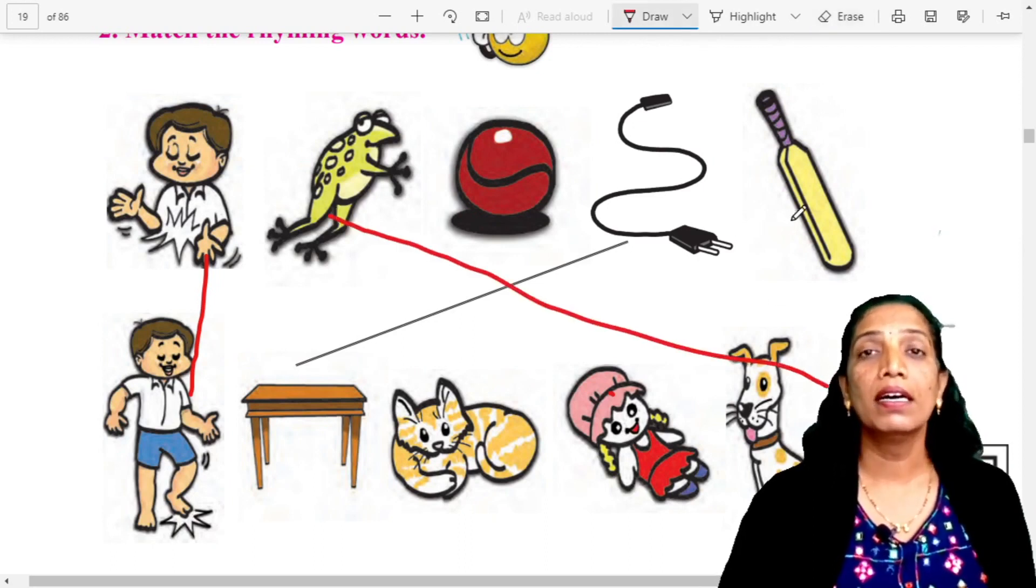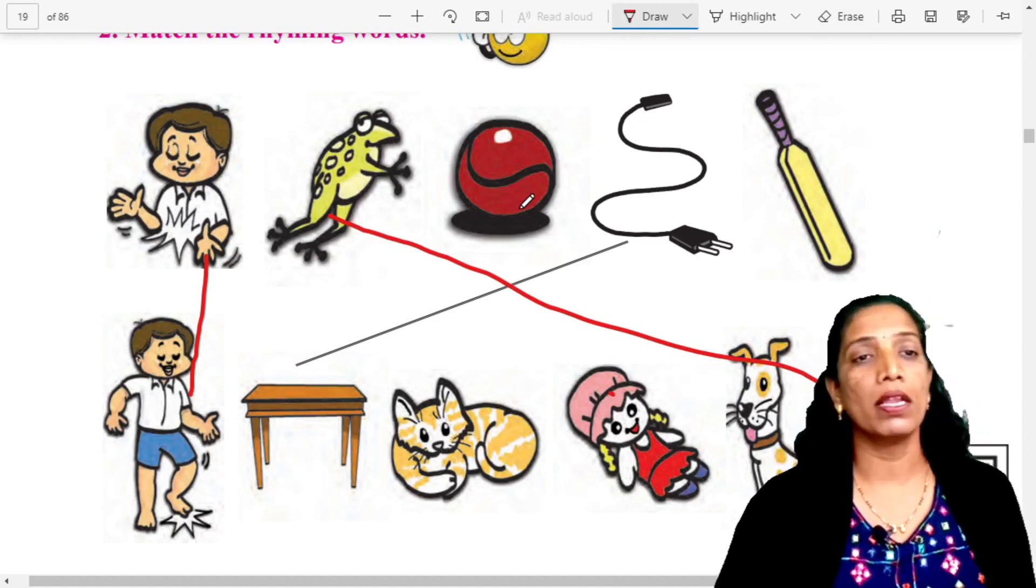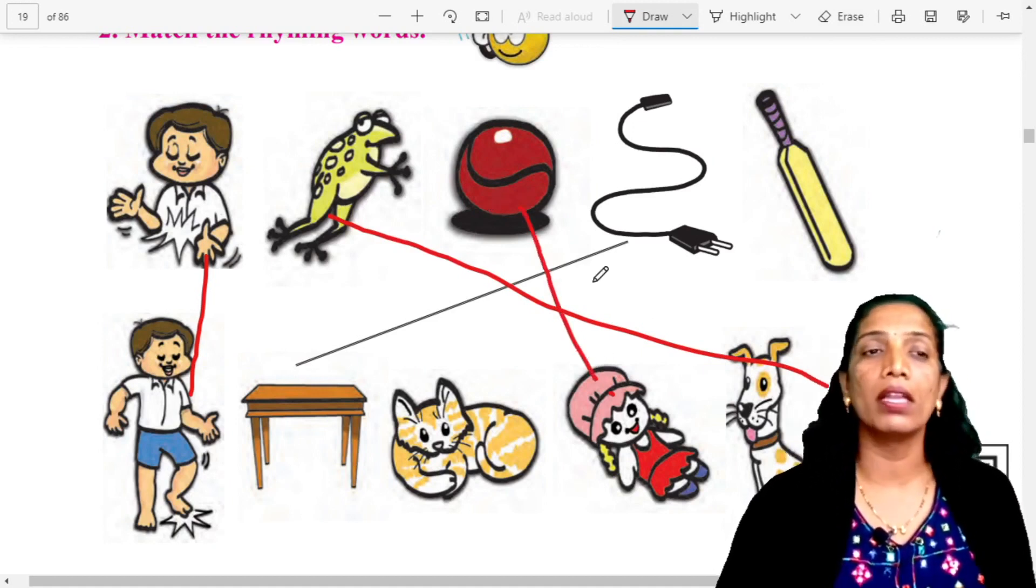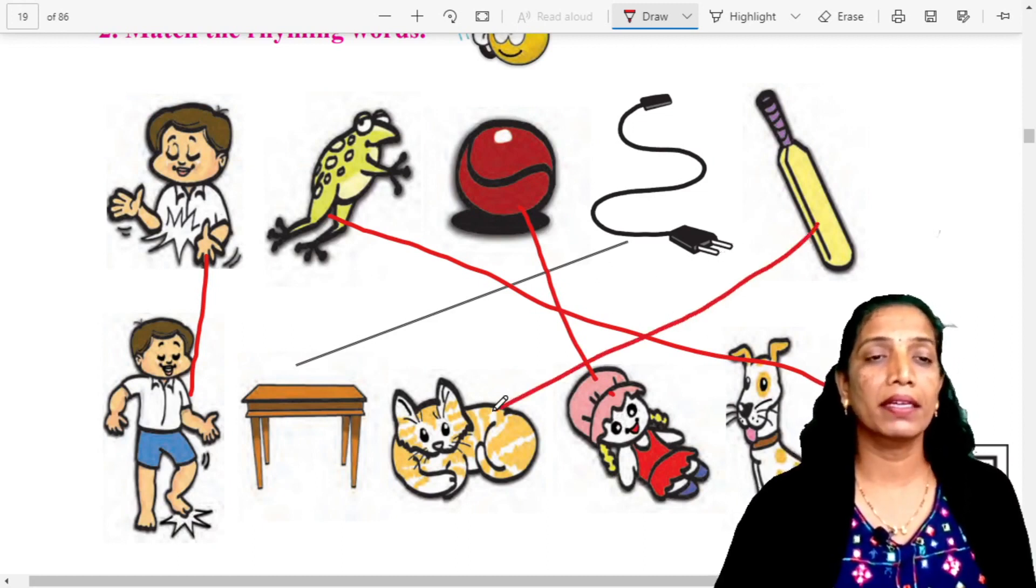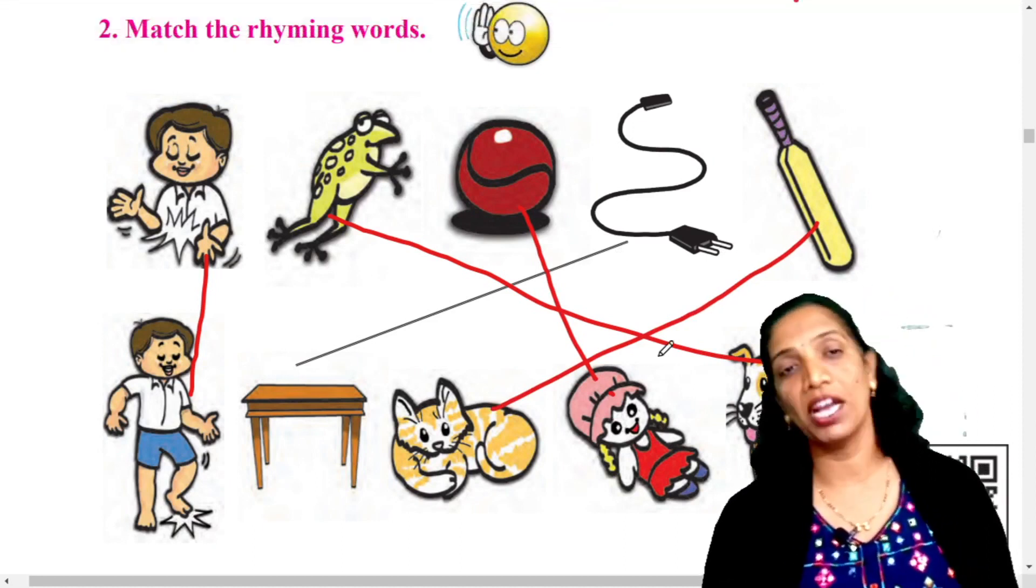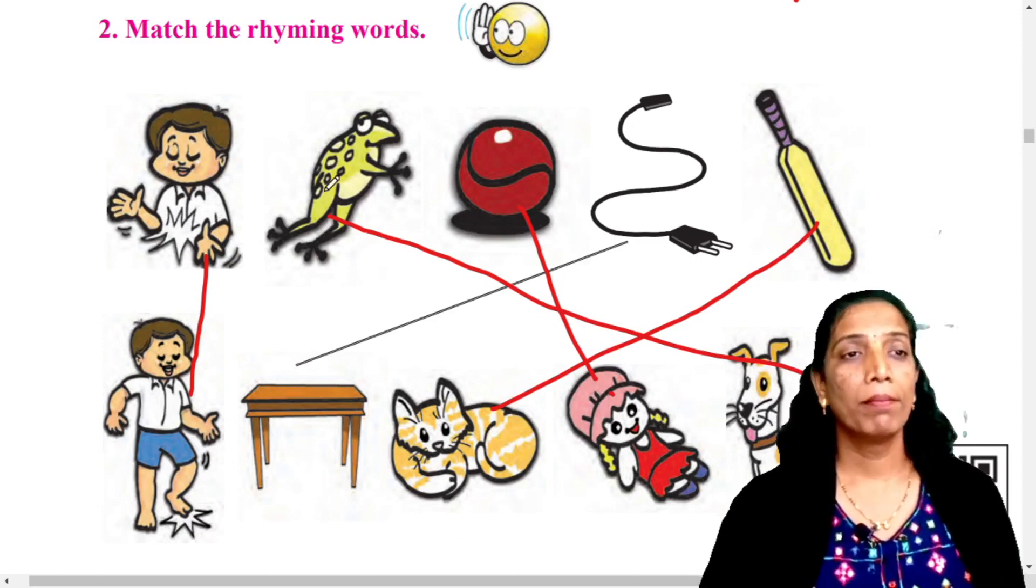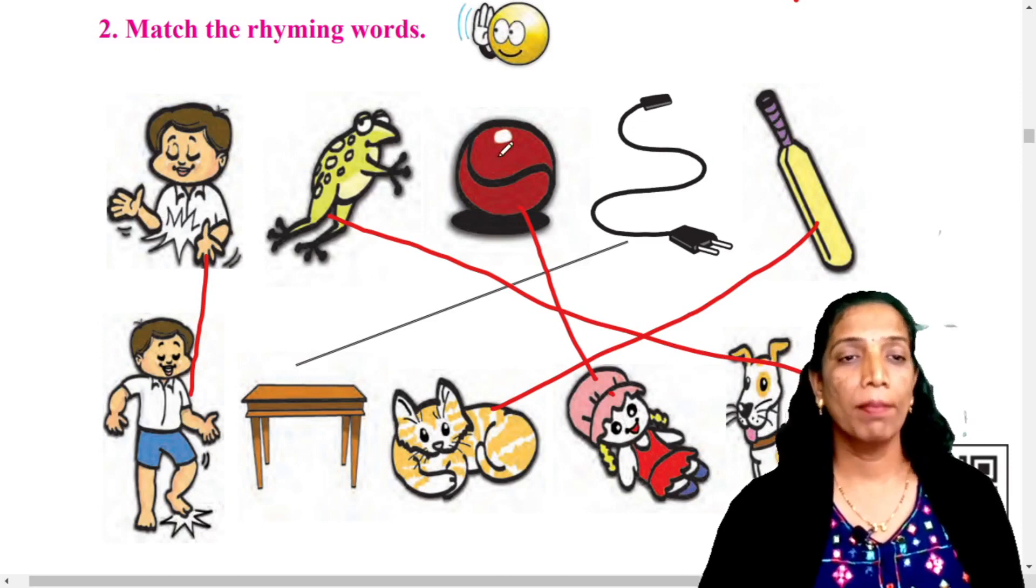Use scale and pencil. Match. What is this? Ball. Ball, doll. Match the ball and doll. Table, table. Table, cable. Match. And bat, cat. Okay? Clap, tap. Frog, dog. Table, table. Ball, doll. Cat, bat. Very good.